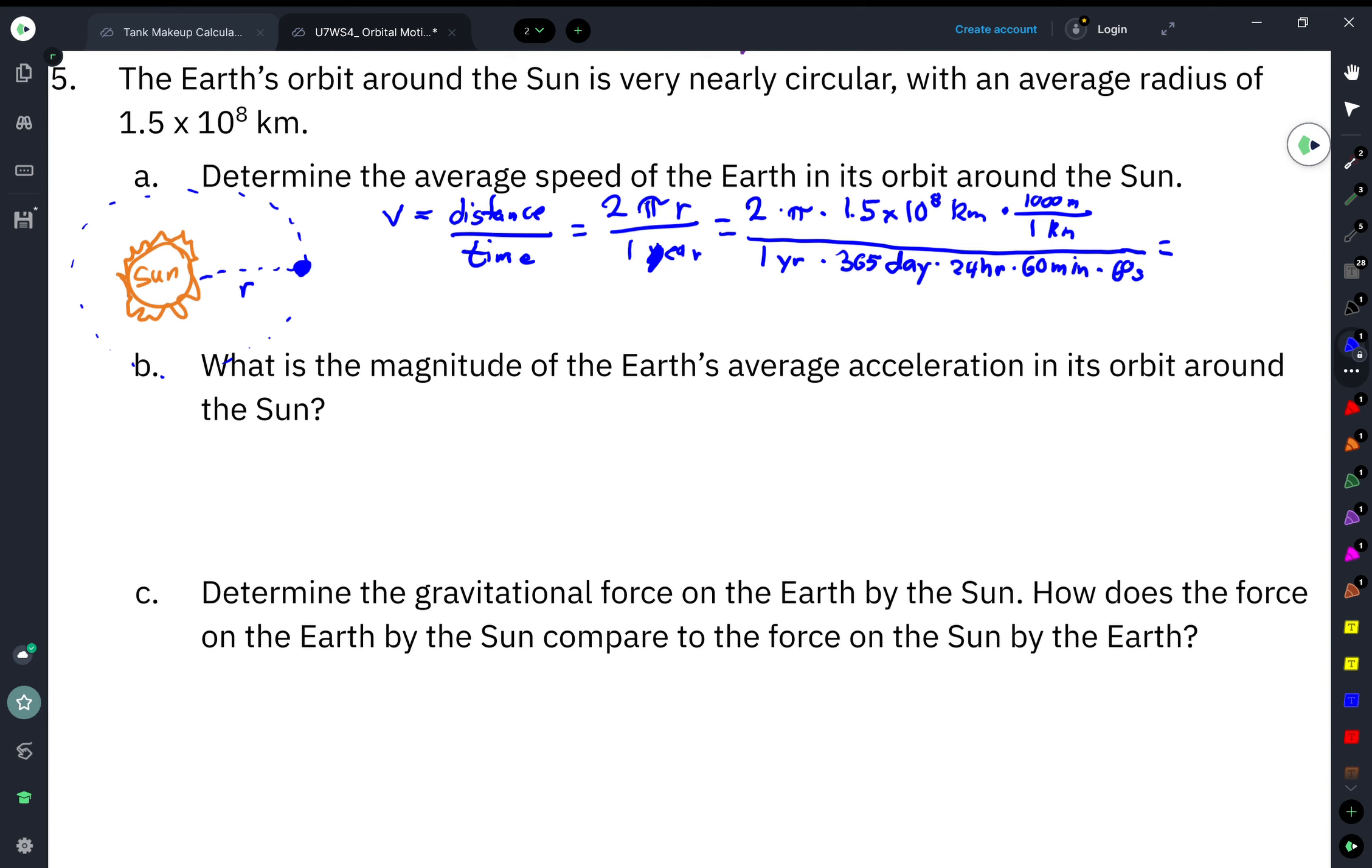When we plug this into our calculators, this is going to be a rather big number. That number, when I plug that into my calculator, and I would recommend you plug this into yours just to make sure that you're comfortable with these calculations, is going to be 29,886 meters per second when we round up. Now that is an absolutely massive speed, but that kind of makes sense because the earth is really far from the sun. So we do need to be moving pretty fast in order to cover that amount of distance every year.